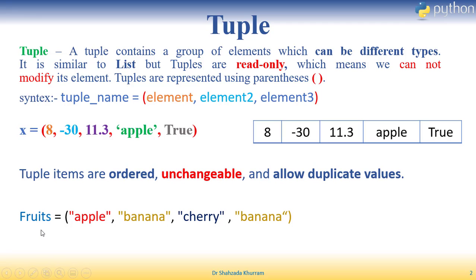Example lete hain — maine fruits ka tuple banaya hai. Uske andar maine apple, banana, cherry, aur banana store kiya. Parentheses se close kar diya. Yeh tuple create ki hai. Ab dekhiye banana do baar use hua hai — yani iske andar hum duplicate values bhi use kar sakte hain, lekin always order mein hi isko call karvayenge.